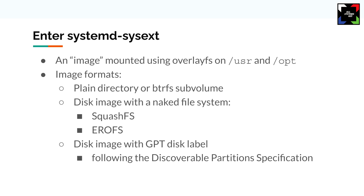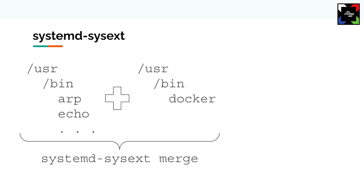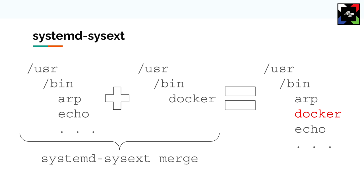That's a way to bring new things into your system, especially when the system can't be extended with regular methods. Here's a regular system with /usr/bin and binaries inside. Suppose I have a sysext image that brings the Docker binaries, libraries, and systemd configuration for Docker. By issuing the command 'systemd-sysext merge', I merge my system with the sysext image — and voilà, Docker is available on my system, accessible to every user.